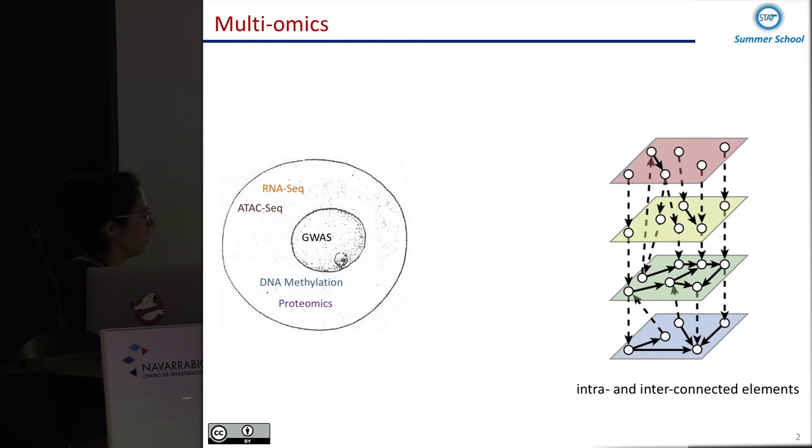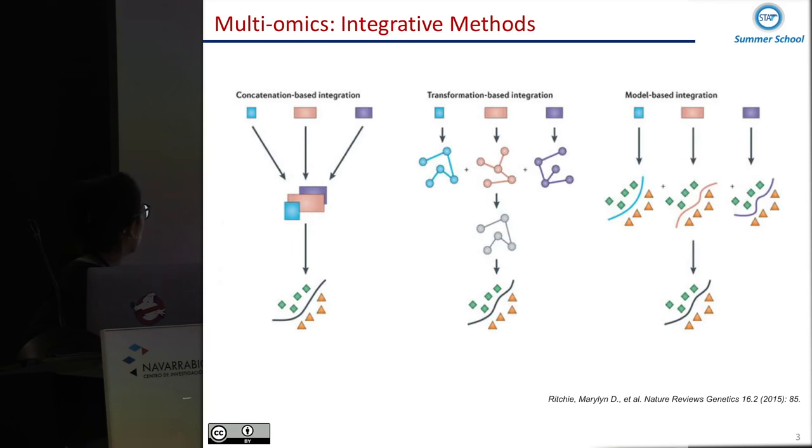The idea of the course and what everyone wants to do is to find the different features from each one of the omics and between the different omics. So the idea is how we can integrate all this data, and there are several methods that we can more or less categorize like this.